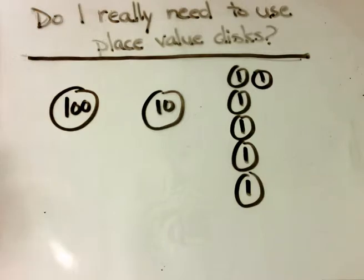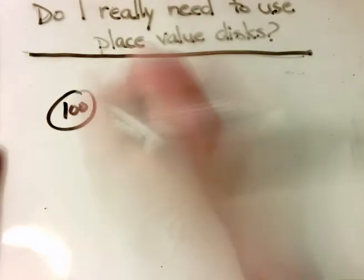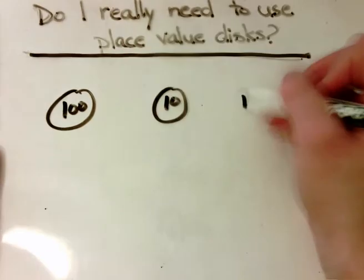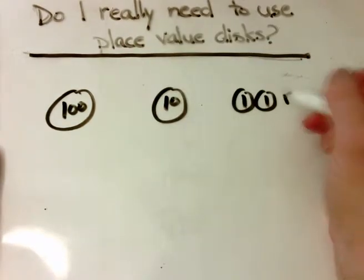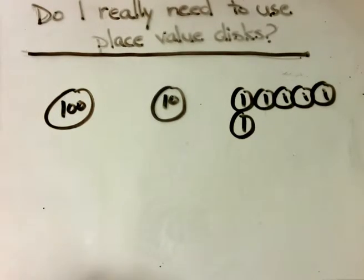Sometimes we draw vertically, but a lot of the time we actually draw in our five group formation that we use so much in grade one, which was five across, and then we made another row underneath.